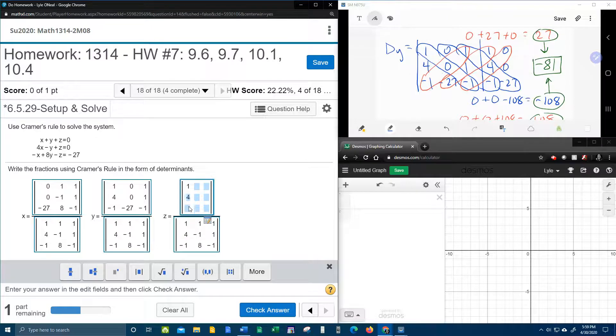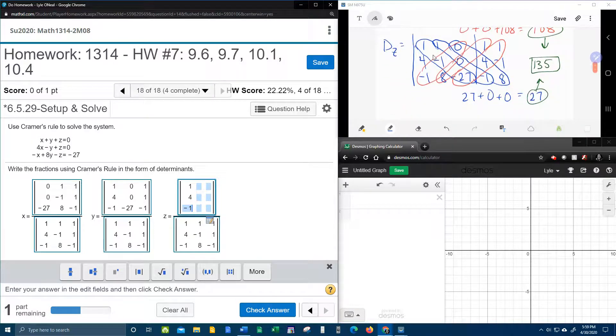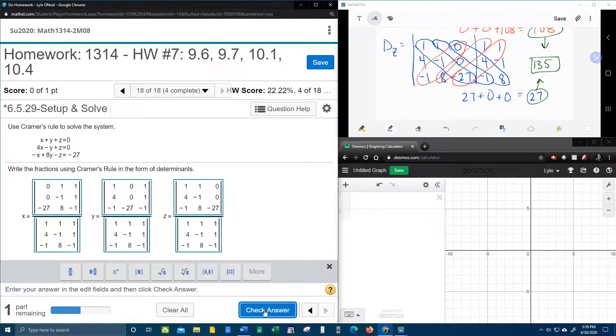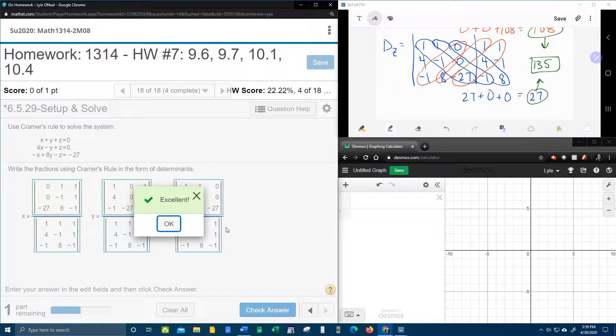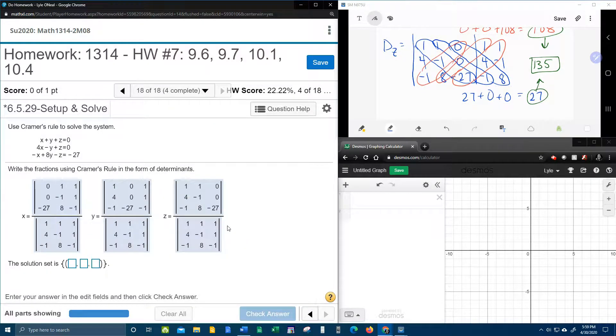1, 4, negative 1. Remember, this is now D sub z, which now I have it pulled up in my screen over here so you can see. 1, 4, negative 1. 1, negative 1, 8. And, we have 0, 0, negative 27. All right, so fingers crossed. Thank the good Lord. We got that right.